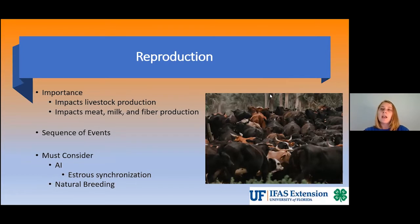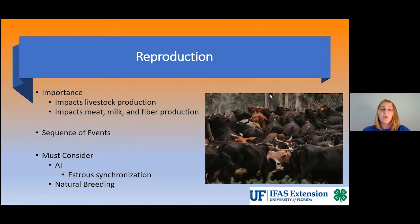Reproduction occurs in an order of events, and it is important to understand these to have a successful reproductive program. Typically you need to consider the time of heat or estrus, and then ovulation, to understand when you're going to breed your cows or heifers. Cow-calf producers should also consider whether they would like to use artificial insemination, which typically includes an estrus synchronization program prior to breeding, or if they would like to use natural breeding.